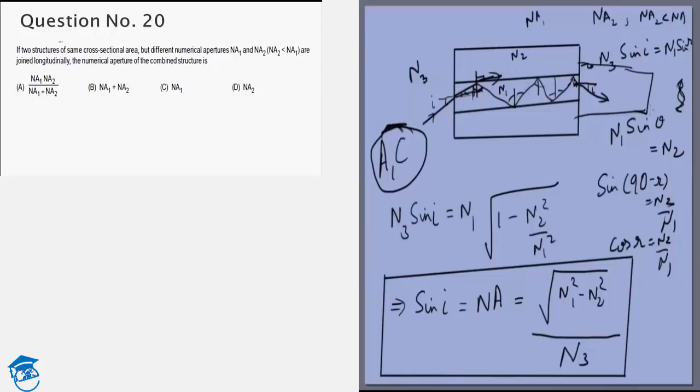So from that you can easily see that the smaller numerical aperture is the determining factor. Light from a smaller numerical aperture can go into a bigger one, but a bigger one cannot go into a smaller one. Both of them have the same eye if they are joined together.